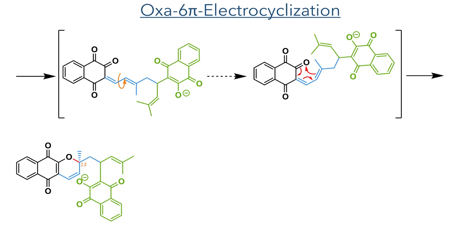This reaction is a pericyclic rearrangement that involves the formation of a new sigma bond forming a ring and the migration of two double bonds. This reaction is not particularly stereoselective, and therefore produced a mixture of isomers with the new stereocenter at the C13 position.